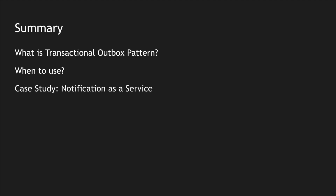To summarize: we saw what the transactional outbox pattern is and how it can fix issues in the saga pattern. We saw when to use it, explained through a notification as a service use case, showing how to publish messages to different consumers based on subscriptions. Finally, we discussed the challenges and limitations. If you found this video helpful, please like and subscribe to the channel. See you in the next video — thank you very much.